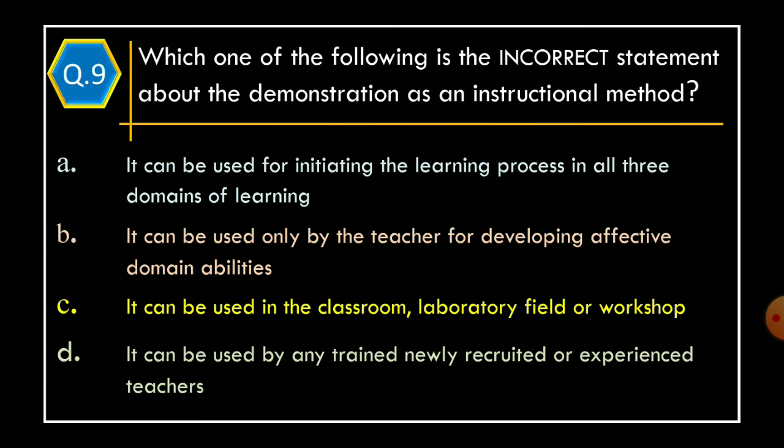Question 9: Which of the following is the incorrect statement about demonstration as an instructional method? Option A, it can be used for initiating the learning process in all three domains of learning; Option B, it can be used only by the teacher for developing affective domain abilities; Option C, it can be used in the classroom, laboratory, field or workshop; Option D, it can be used by any trained, newly recruited or experienced teachers.